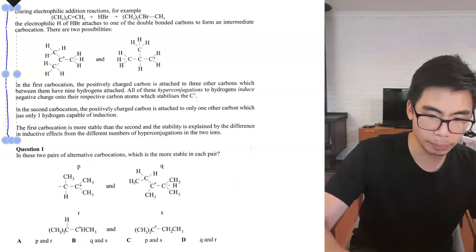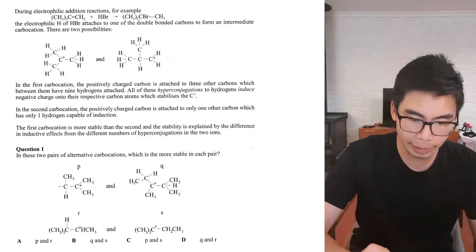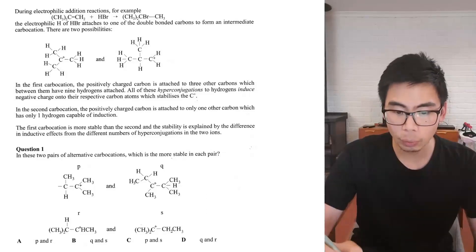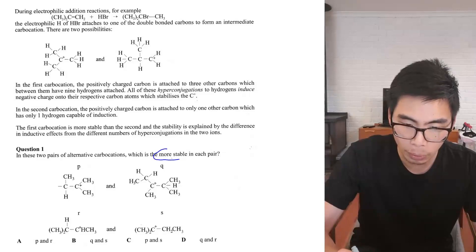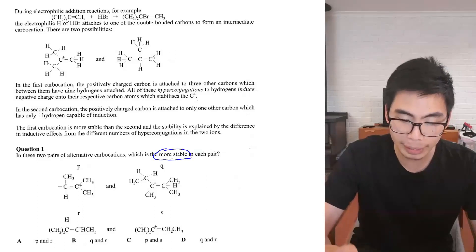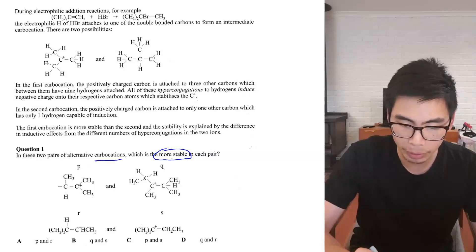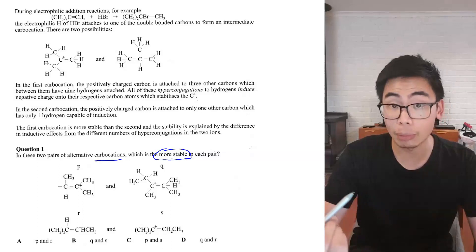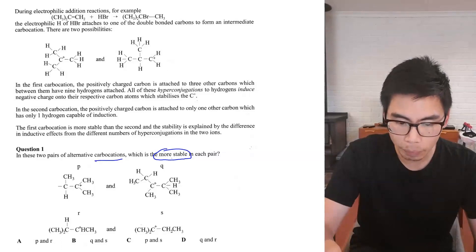I like to go to the question stem first, so let's get started on question one: in these two pairs of alternative carbocations, which is the more stable in each pair? We're trying to figure out which one is more stable in each pair. They're referring to carbocations — those structures P and Q, as well as R and S — and we're figuring out which of P versus Q or R versus S is more stable.